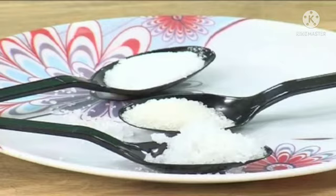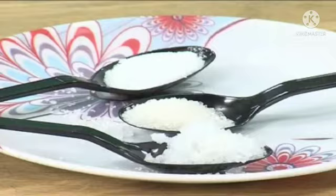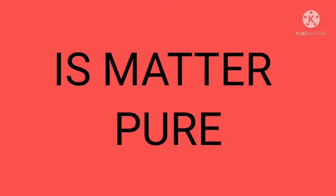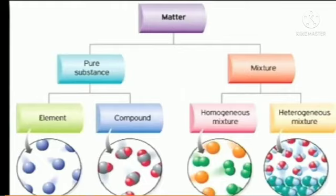in this lesson we will study about pure substances and mixtures. Salt is a substance we use in our daily life to taste our food. Sugar is used daily in our life because it gives sweetness. Salt and sugar are pure substances. In this lesson we will be studying 9th class: Is matter pure? Matter is a substance which has mass and occupies space. Matter is of two types: pure substances and mixtures.